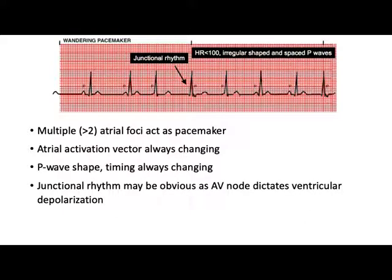This is a miniature version of fibrillation we'll see later, but there's more order here. In the wandering pacemaker, there's always one location starting the cardiac cycle — it just moves around: SA node, atria, or AV node — but it's still ordered. One place is trying to initiate contraction only; it just moves around.